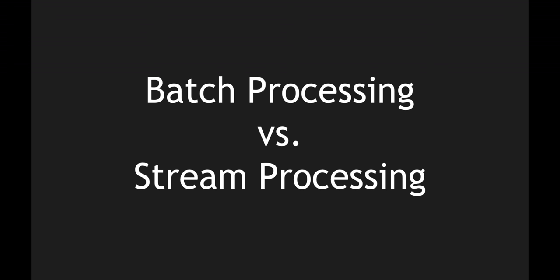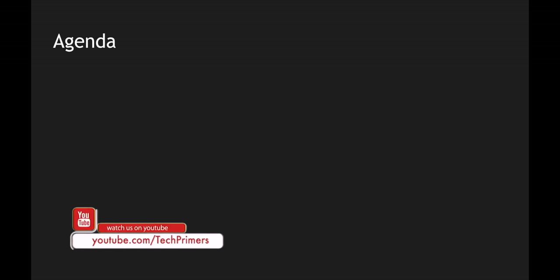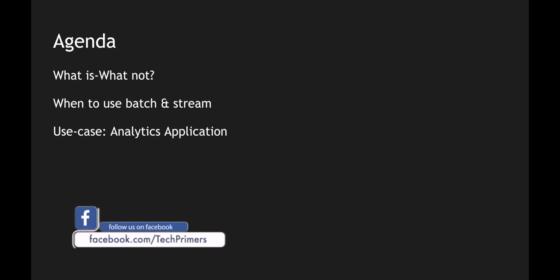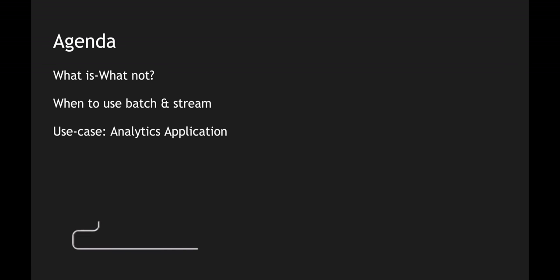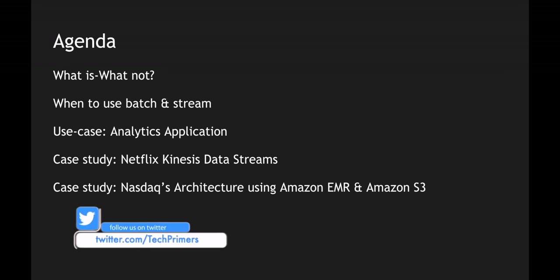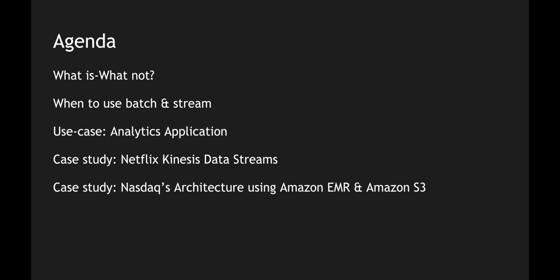We're going to look at batch processing systems and stream processing systems and how they differ from each other with different use cases. The agenda for this video is as follows: we're going to see what each of these mean, when to use batch and when to use streams. We are also going to create an analytical application using an imaginary architecture leveraging both batch and stream processing. We'll also look at how Netflix uses Kinesis data streams and how Nasdaq uses Amazon EMR.